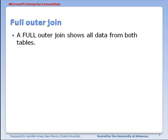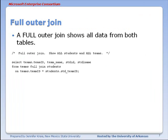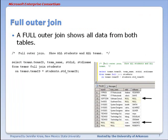There's also a full outer join. This will show all data from both tables. In this query, I'm going to show team ID, team name, student ID, and student last name. So I'm not doing a student count.